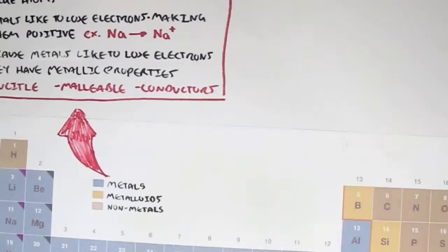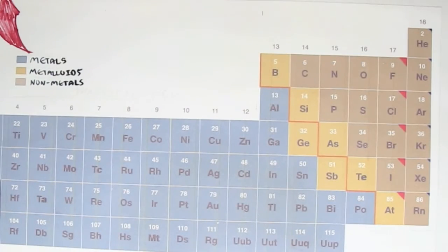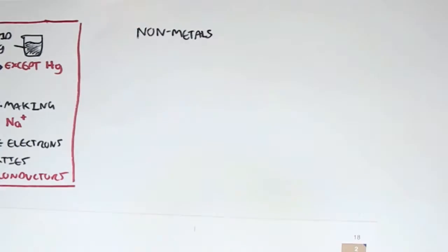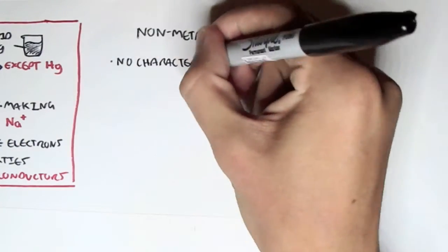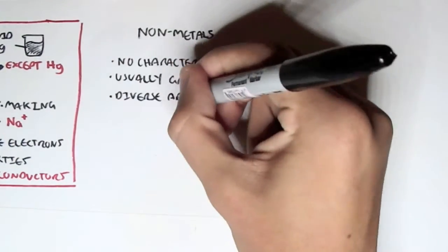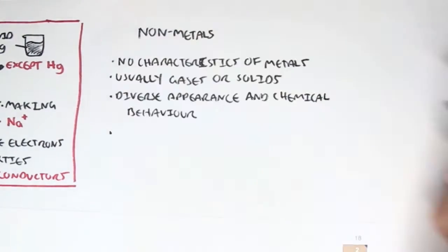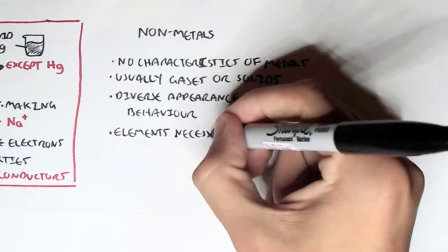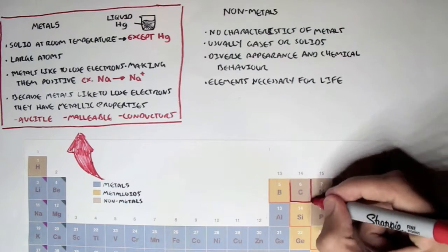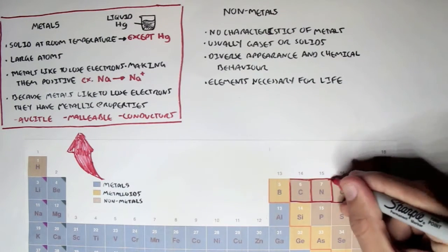Next, let's look at nonmetals, these brown ones, this brown part of the periodic table. Nonmetals have no characteristics of metals. That is why they're called nonmetals. Usually, they're gases or solids. They have diverse appearance and chemical behavior. They also include elements necessary for life and for health. As I mentioned, these were carbon, nitrogen, oxygen, and hydrogen.